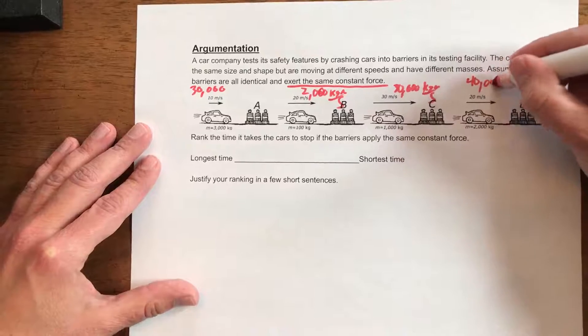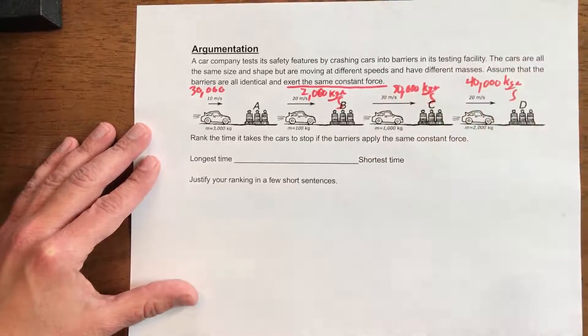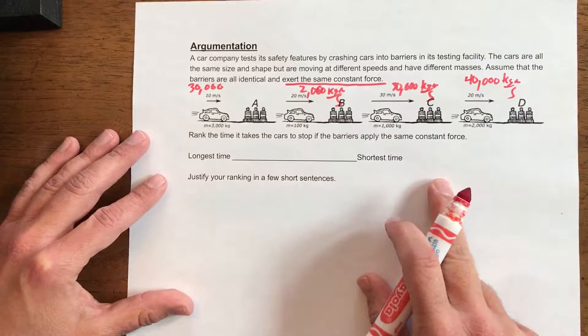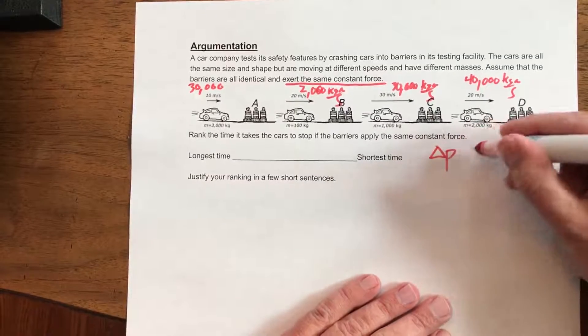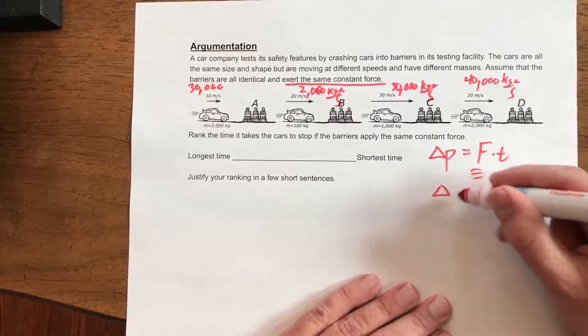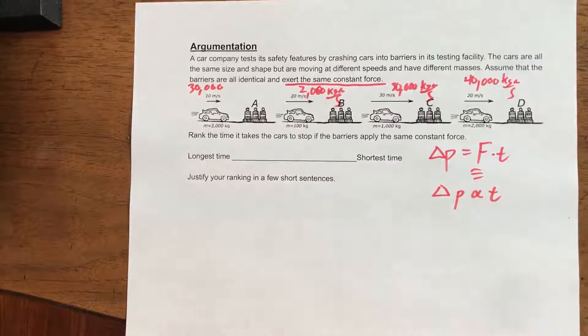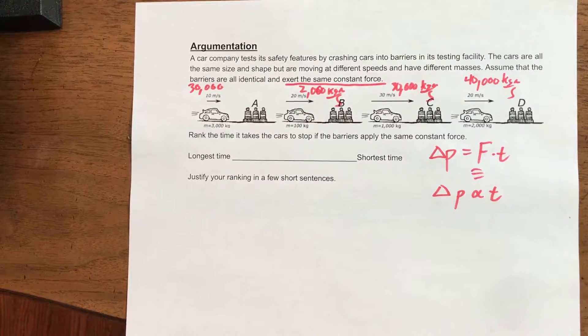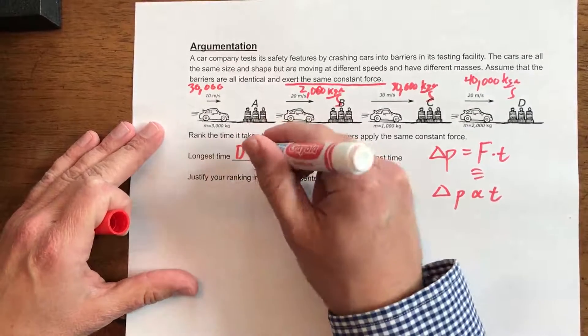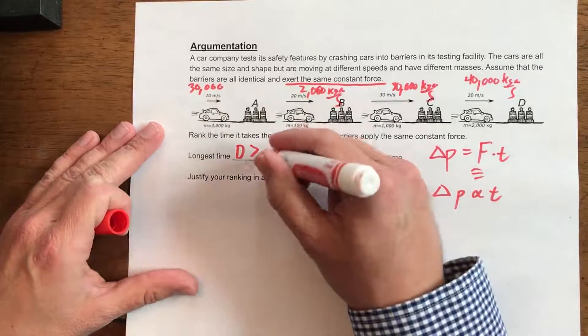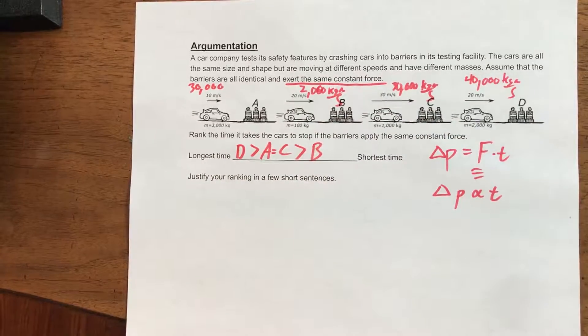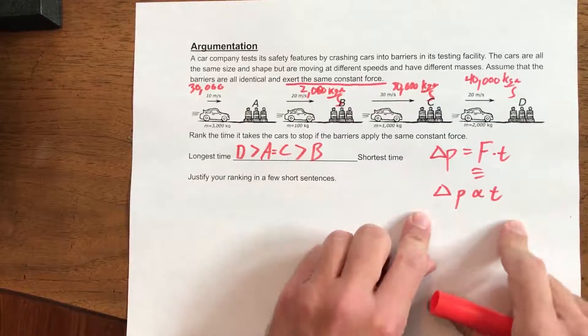And 20 times 2,000 is in that case 40,000 kilogram meters per second of momentum. So here's the key: rank them from longest to shortest amount of time. Well the force is the same, we each have to take away all of their momentum, and we've got to do that with an impulse. The change in momentum has got to be proportional to the time. The more momentum you have to take away, the more time it's going to take. So that means the longest time is going to go over here, D. And D is going to take more time than A here, which is 30,000, which is the same as C, and that is greater than B. Our justification there is basically what we just said there, the impulse momentum equation.